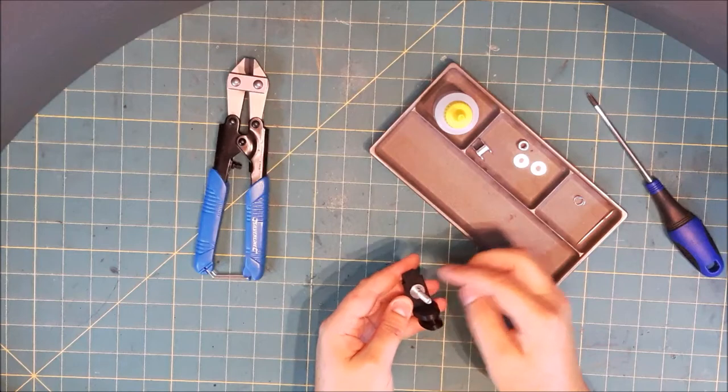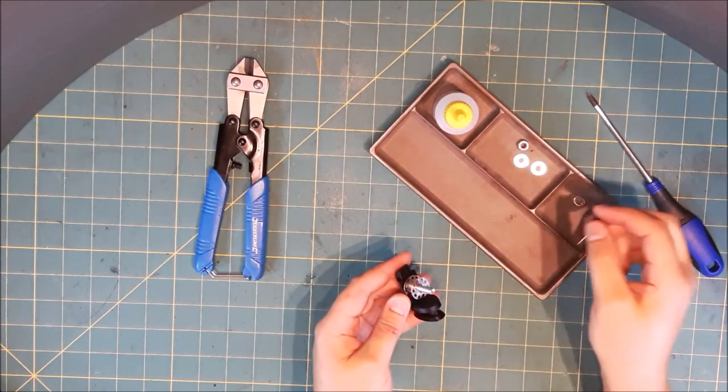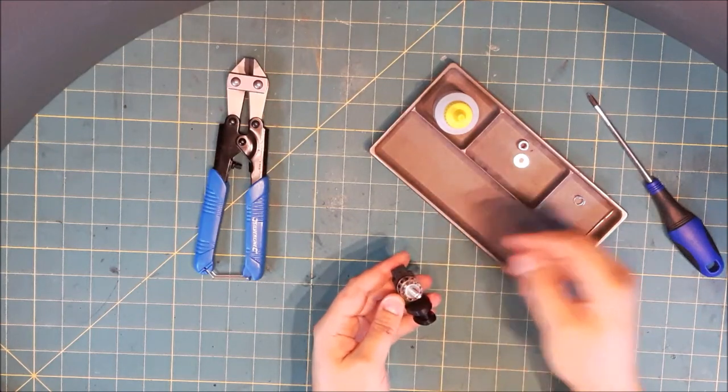So now we put on a washer and a sewing machine bobbin. I've bought a lot of 50 of those off eBay. Another washer.